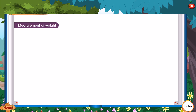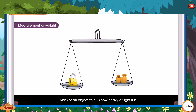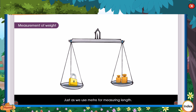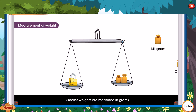Measurement of Weight. The mass of an object tells us how heavy or light it is. We use weighing scales to find the mass of an object. Just as we use meters for measuring length, we use kilograms for measuring mass. Smaller weights are measured in grams. Kilogram is written as kg and gram is written as g.